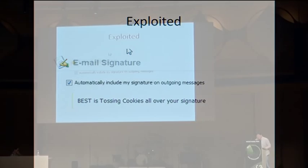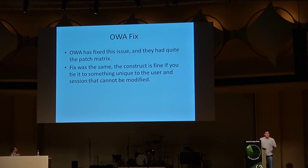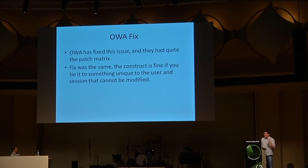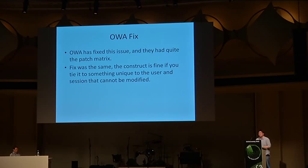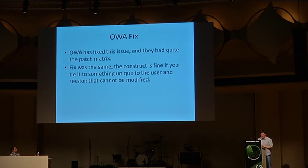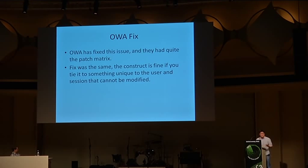You can see cookie tossing can be a very effective technique in bypassing weak cross-site request forgery mitigations. Outlook has clearly fixed this issue — they had quite a complicated patch matrix but they got it done. The fix was similar: you always want to make sure you use a value unique to the user that cannot be modified. There are really two properties that should hold: first, an attacker should not be able to use an arbitrary pair of cookie value and GET or POST parameter to forge a request; and second, the attacker should not be able to repurpose his own legitimate value for such an attack.